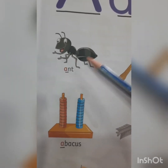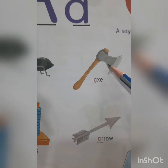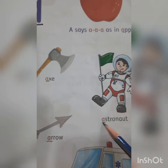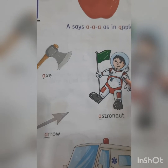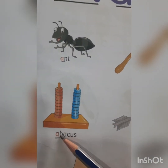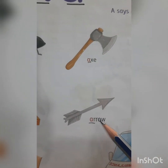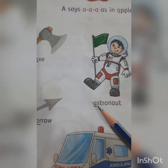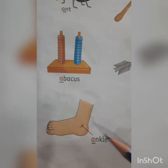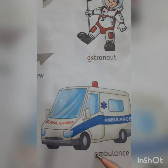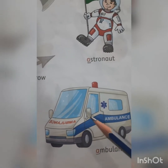A-N-T. Ant. A-X-E. Axe. A-S-T-R-O-N-A-U-T. Astronaut. A-B-A-C-U-S. Abacus. A-double R-O-W. Arrow. A-N-K-L-E. Ankle. A-M-B-U-L-A-N-C-E. Ambulance.